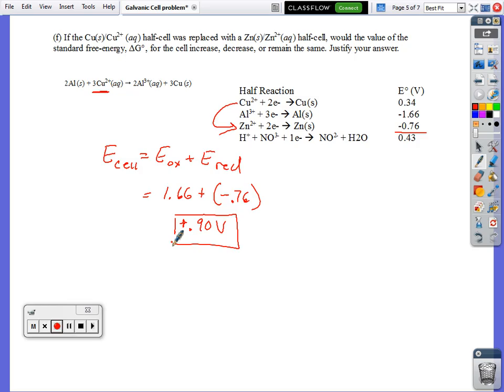Once you've found the E for the cell, the fact that this is a lower number, let's get our equation back. Delta G equals negative nFE. If we have a smaller value for E, a less positive value, that means delta G is going to be less negative. Rather than just saying increase or decrease, I would say delta G will increase,